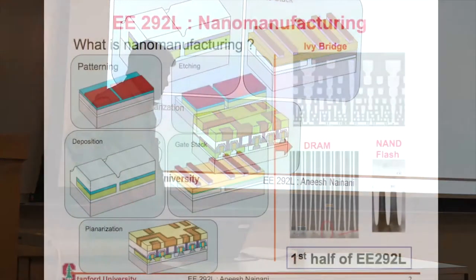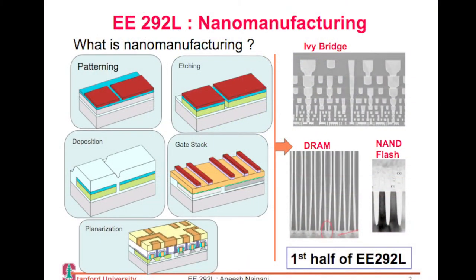So what is nanomanufacturing? Nanomanufacturing is a set of processes such as patterning things, etching things on a nanoscale, depositing things on a nanoscale, making gate stacks, making interconnects, making planarization. And this enables us to make things like this.